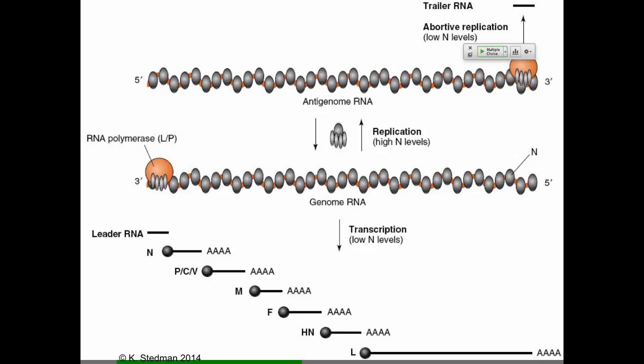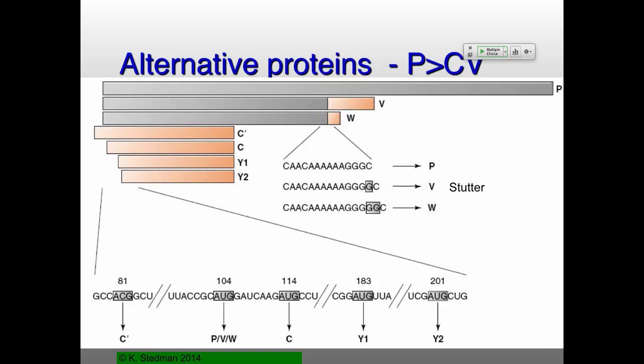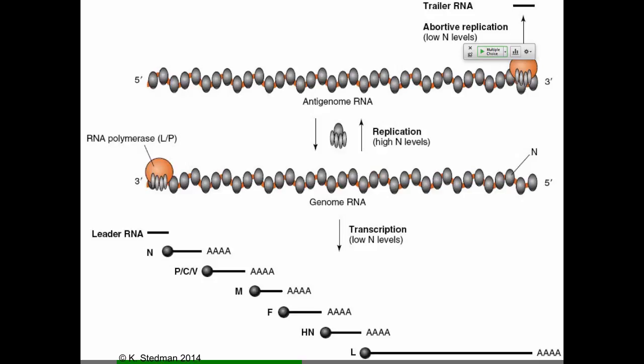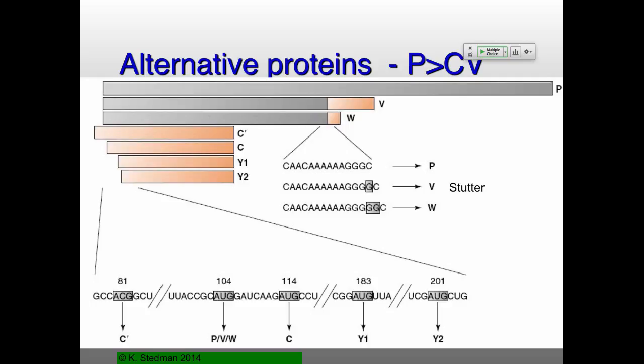Someone asked last time about the P/C/V proteins and the various editing processes. There's this messenger RNA for P/C/V — why do you have three genes being made by one messenger RNA? That happens in two different ways. One is exactly the same thing that happens in the intergenic regions to add lots of A residues. In this case, a couple of extra G residues are added during RNA polymerase processing, which just changes the open reading frame. So that messenger RNA now has either one or two extra Gs — sometimes three — giving you three different proteins just because of this stuttering.